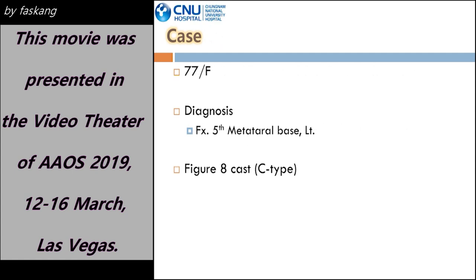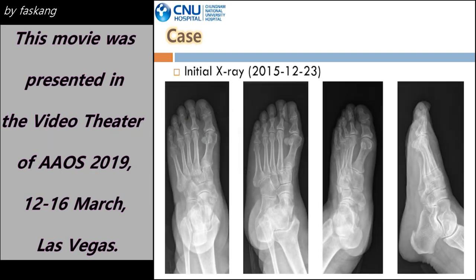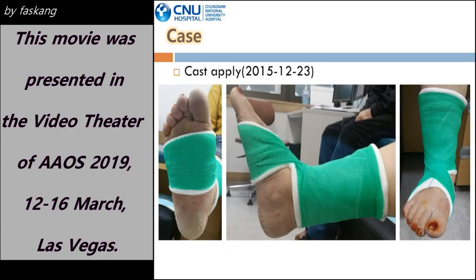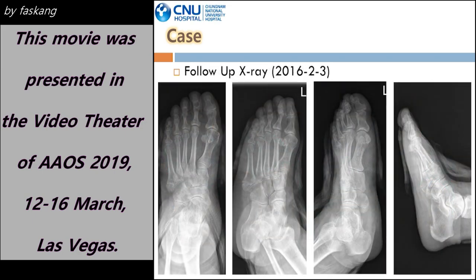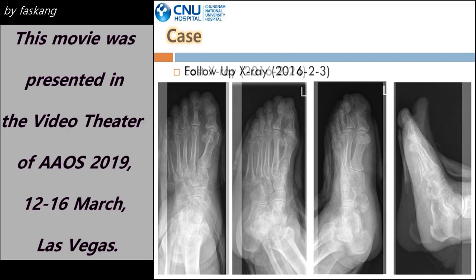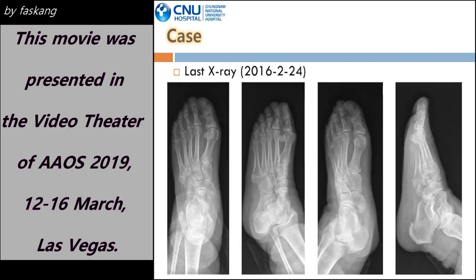This is the case of conservative treatment. The heel-open cast of C-type was applied to a patient with a metatarsal base fracture of the fifth on the left side. This is the initial x-ray when the patient visited. After applying the C-type heel-open cast, conservative treatment was performed. At 6 weeks after cast fixation, the fracture site remained relatively stable and the cast was removed on that day. Successful union was obtained 9 weeks after injury.